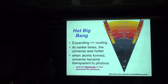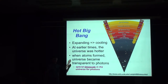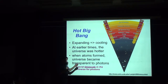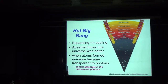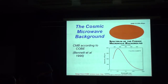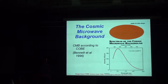These photons at 300,000 years were about 3,000 Kelvin. Since then the universe has been expanding, so the photons kept cooling. We see them today as a 3 Kelvin background — the 3 Kelvin CMB spectrum.